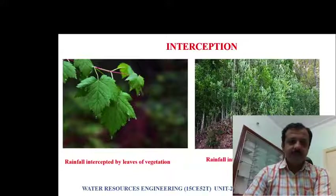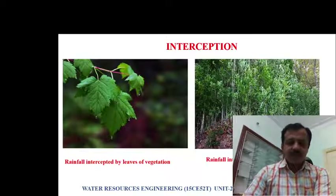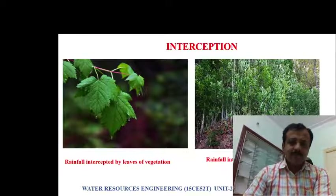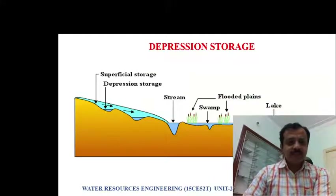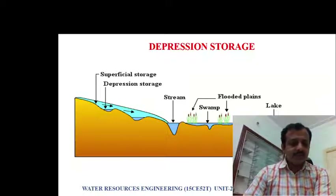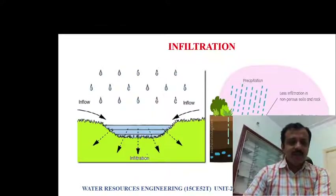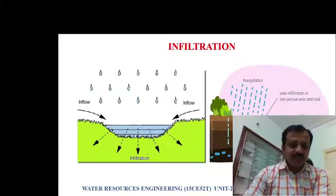Interception is when rainwater, after falling onto the ground surface, gets intercepted on leaves and also on parts of buildings. This part of rainfall which gets intercepted is called interception loss. Depression storage is water stored in the form of ponds, lakes, streams, etc. Infiltration is that part of precipitation which flows into the ground and reaches the water table.